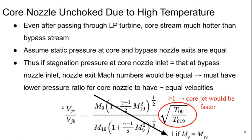So in order to get the core jet to have roughly equal velocity with the bypass, it must be the case that M9 is significantly less than M19, and therefore if M19 is 1 because it's choked, M9 must be unchoked.